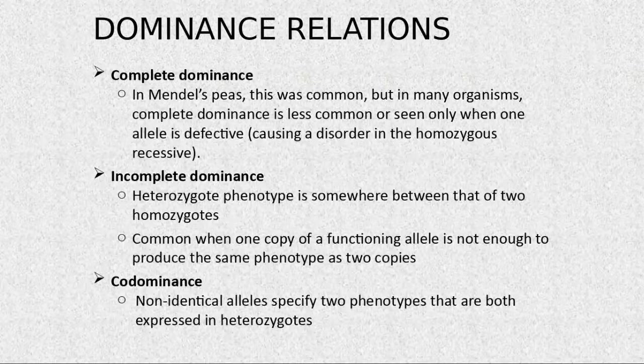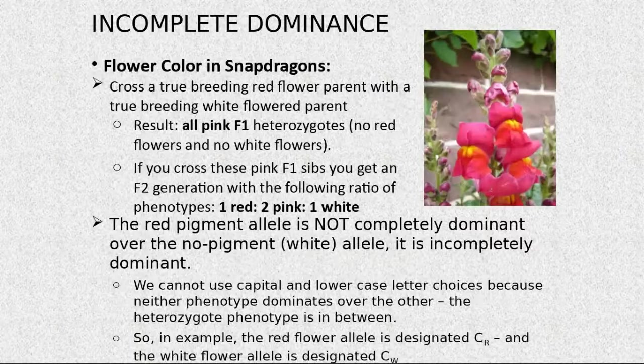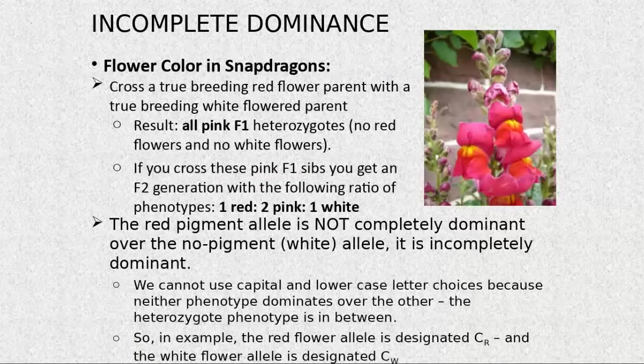An example of incomplete dominance: when we cross true-breeding red flowers with true-breeding white flowers, we obtain all F1 as pink heterozygotes. No red flowers and no white flowers appear — only pink.